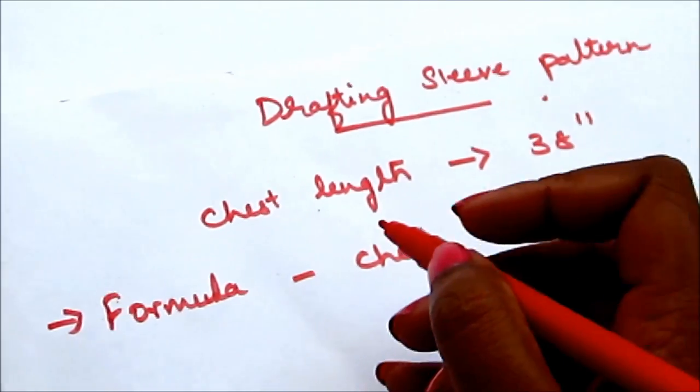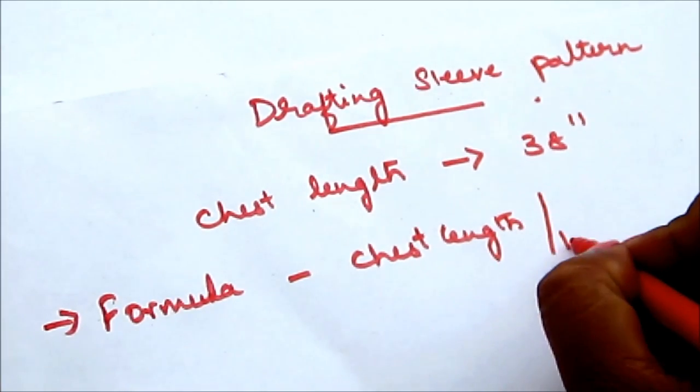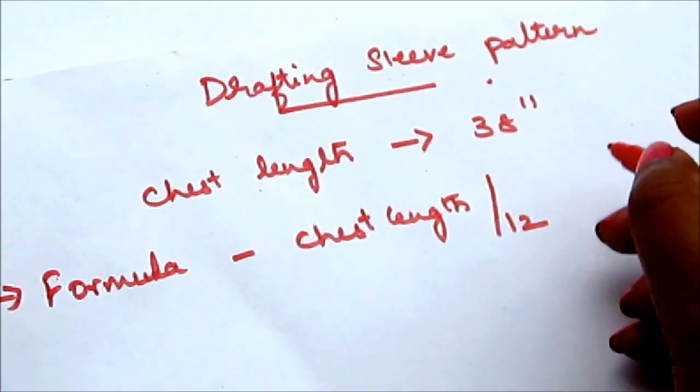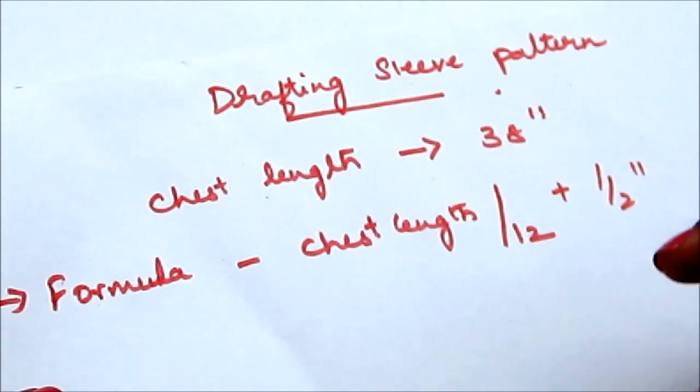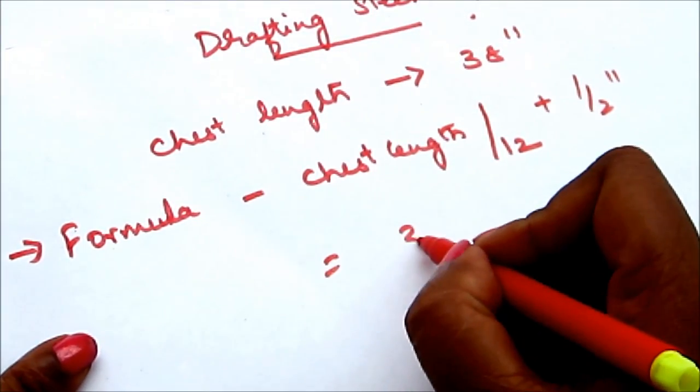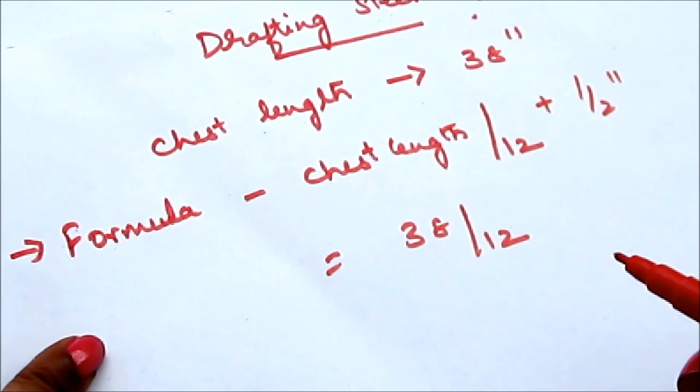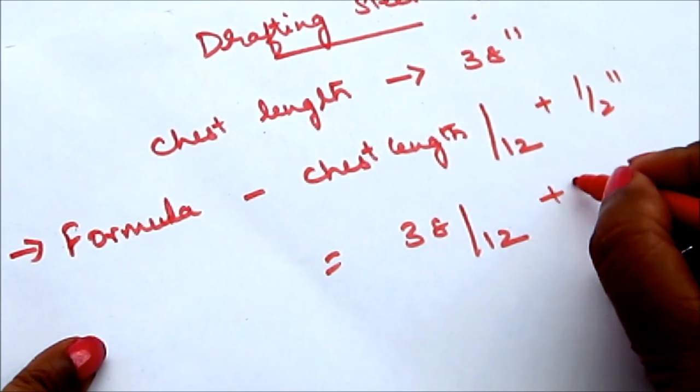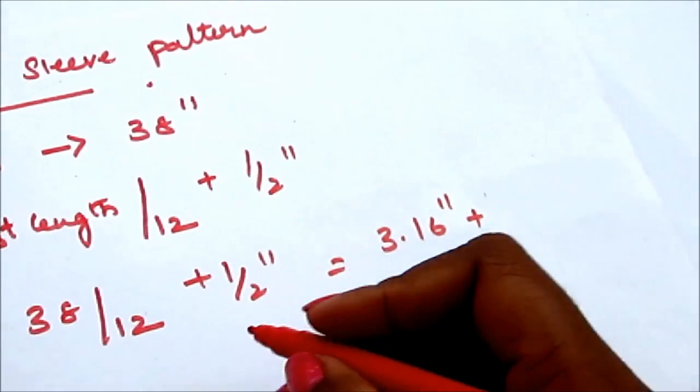This is the formula to calculate the upper part or the biceps in the arm which is most required to draft the sleeve pattern. For this I would be taking the chest length of 38 inches. Whatever is your chest length you divide that by 12. Ensure you take the same measurements of the chest length which you took for the body sloper or for marking your measurements.